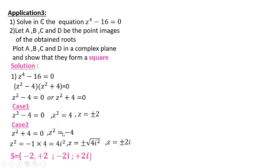Pay attention: if we solve this equation not in C but in R, then the equation z² + 4 = 0 does not have a root, simply because there is no real number whose square is −4. There is a difference between solving in C and solving in R.